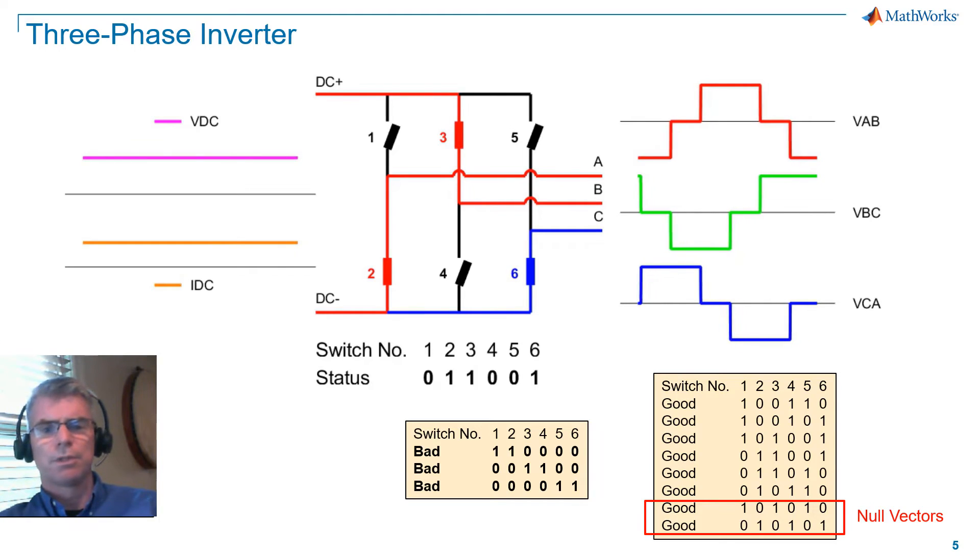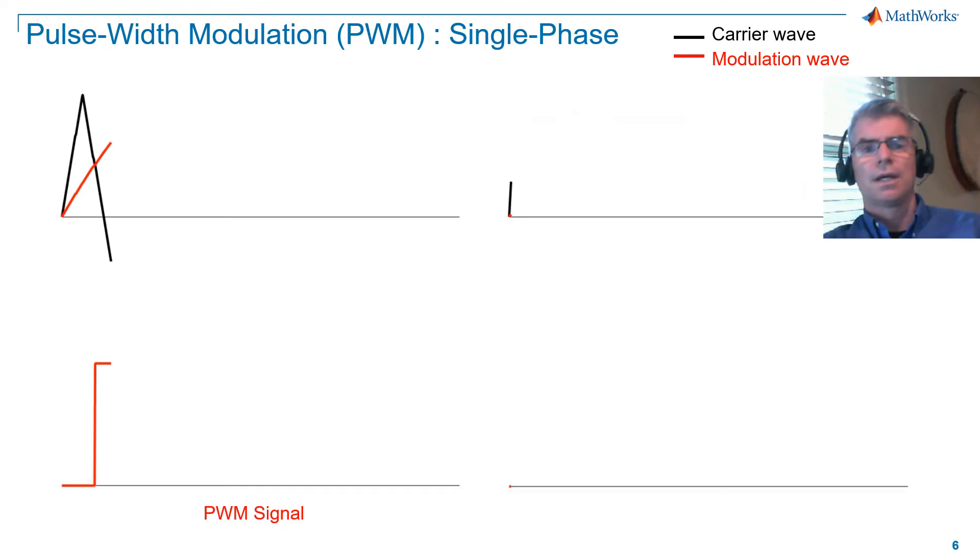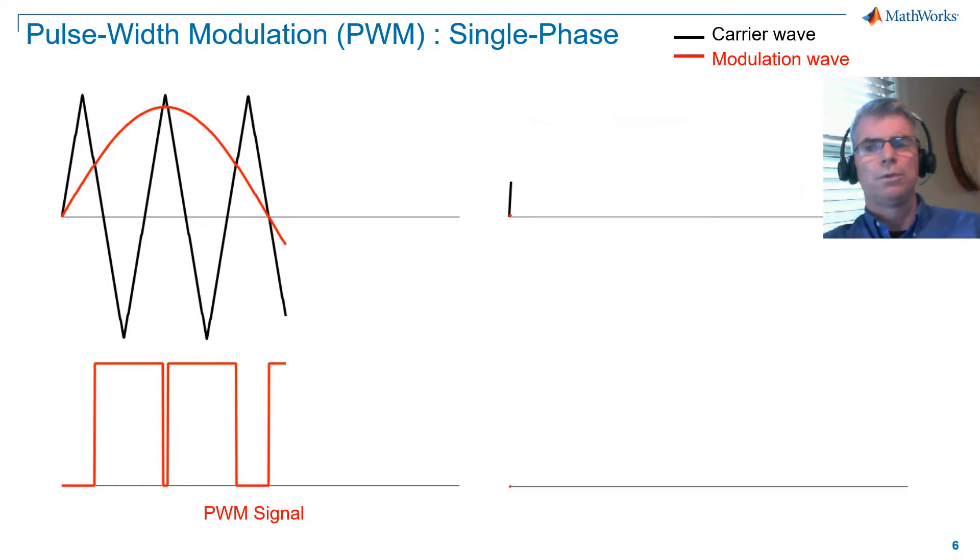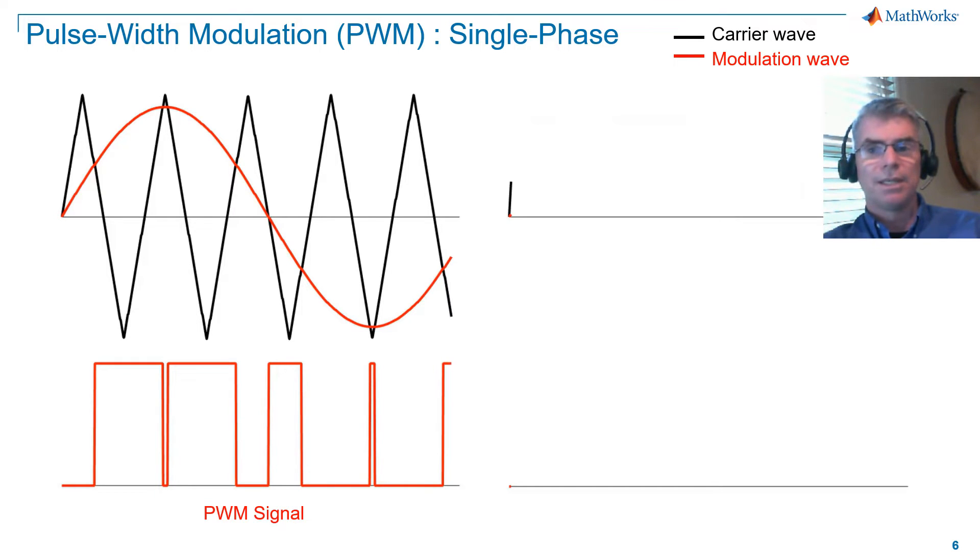So what is pulse width modulation? As we are able only to turn switches on and off, we need a way to emulate a sinusoid using discrete switching states. We do this with pulse width modulation, or PWM.